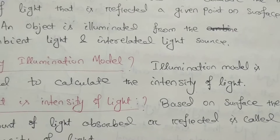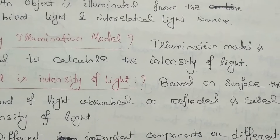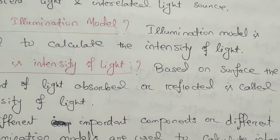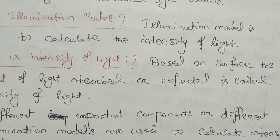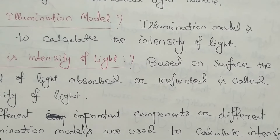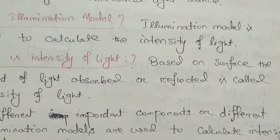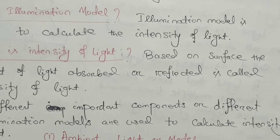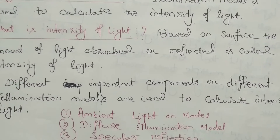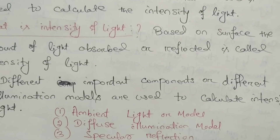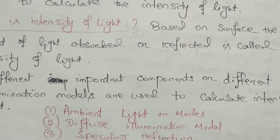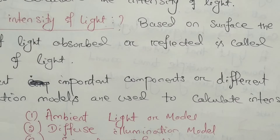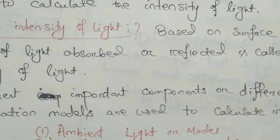Why illumination model? Illumination model is used to calculate the intensity of light based on surface. The amount of light observed or reflected is called as intensity of light — the surface on which the light is projected may be shiny or rough. There are different models used to calculate the intensity of light: the first model is ambient light or ambient model, then diffuse illumination model, then specular reflection model.